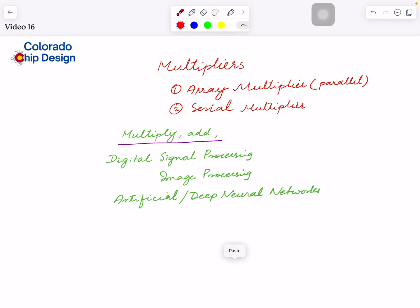Hello everyone, today we are going to look into multipliers. There are two types of multipliers: the first one is array multiplier, which I call a parallel multiplier, second one is serial multiplier. I will explain the differences between the two when I get to the individual details.